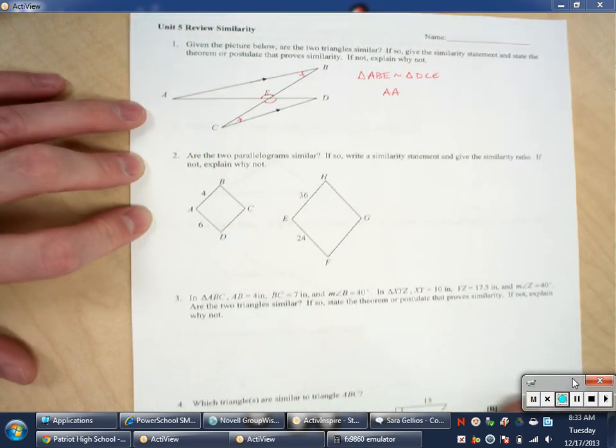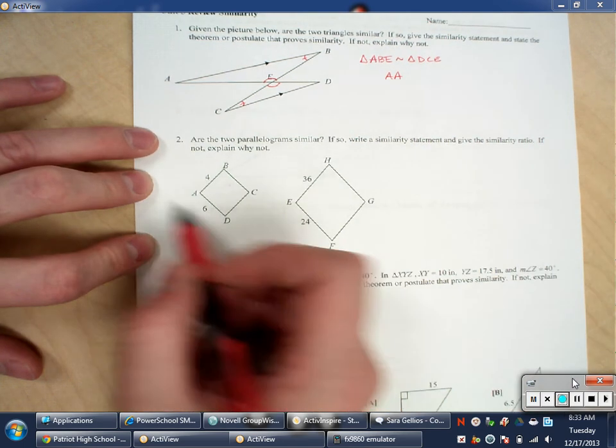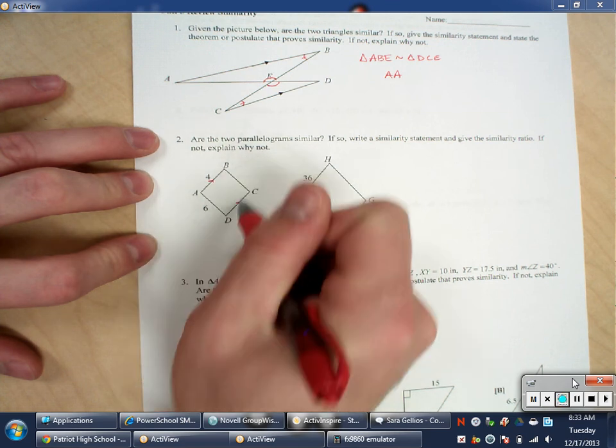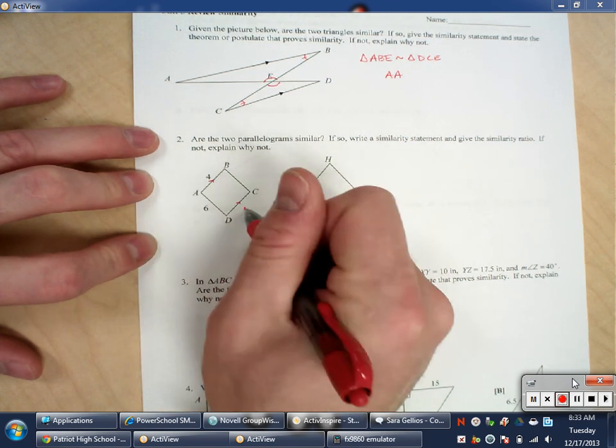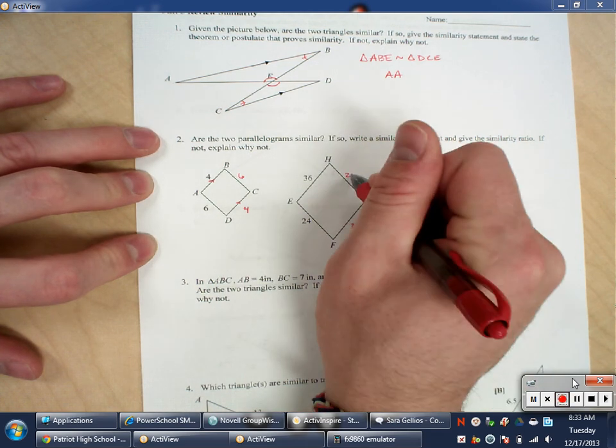Let's take a look at number two. Are the two parallelograms similar? Well, first I'm going to label these as parallelograms. I can do that by marking the sides parallel. That's important. For this, it's also important to understand that opposite sides are congruent. I know that because I graduated middle school.